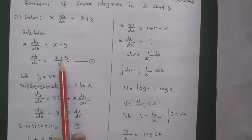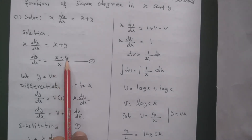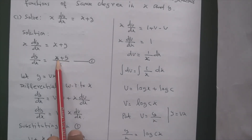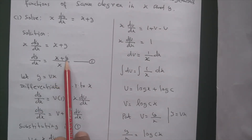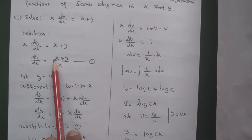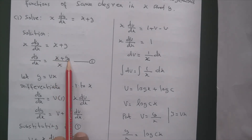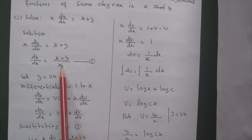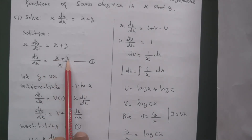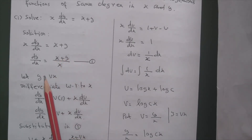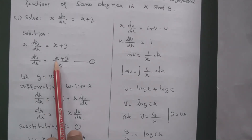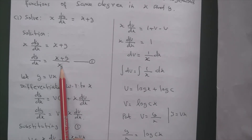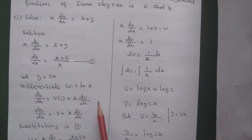To confirm: x plus y is a term where x has degree 1 and y has degree 1, so total degree is 1. The denominator x has degree 1. Note that x into y would be degree 2 since you add the powers. So here numerator degree is 1 and denominator degree is 1 — it is a homogeneous differential equation.